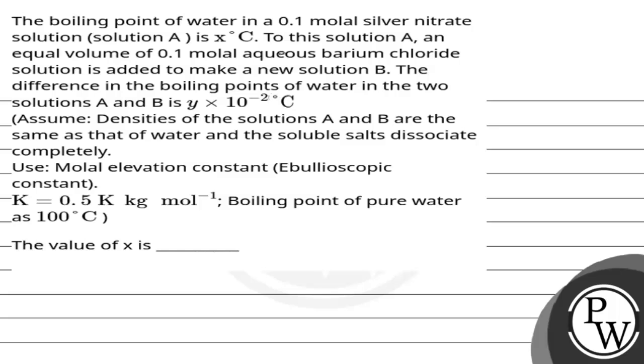Hello Bacho, let's read the question. The question says the boiling point of water in a 0.1 molal silver nitrate solution, Solution A, is x degree Celsius.